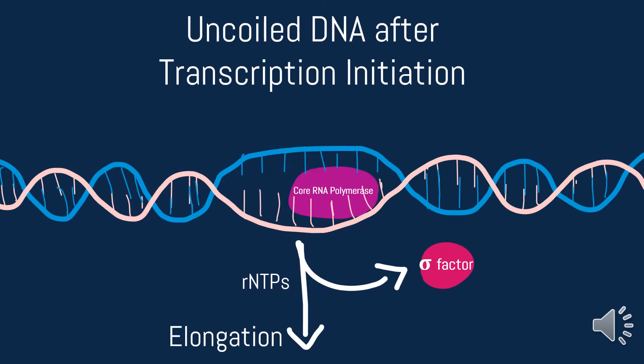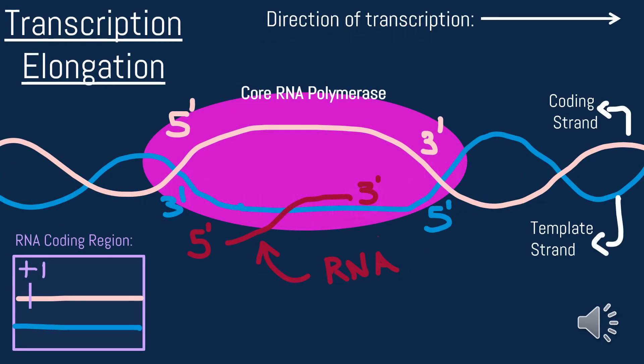After initiation, the sigma factor disassociates after a few nucleotides are added. RNA polymerase stays and works with RNTPs to begin the process of elongation. What we see here is the unwound RNA coding region where elongation occurs. As mentioned before, RNA polymerase stays to synthesize RNA by following a strand of DNA in the direction of transcription. New nucleotides are added to the 3' end of the RNA molecule.